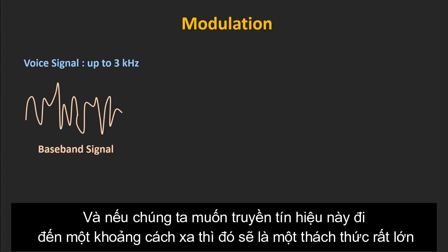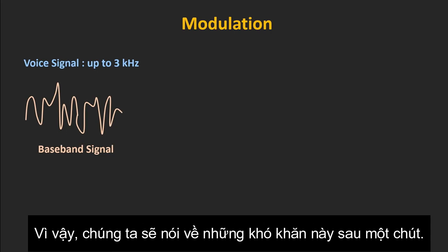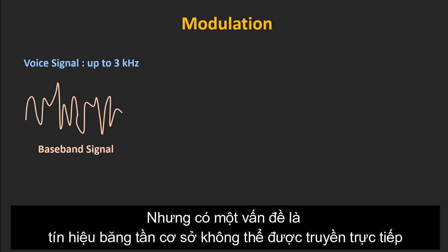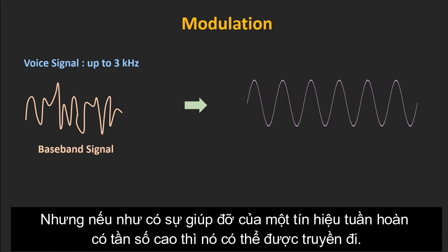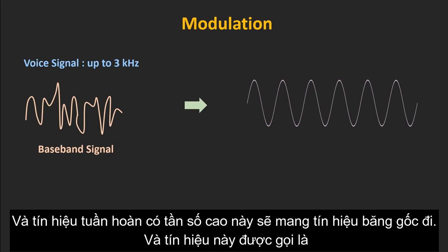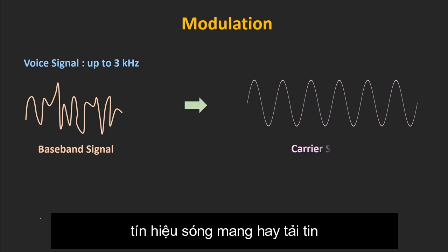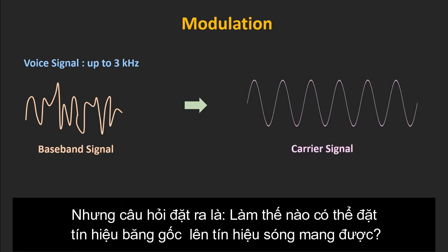If we want to transmit this baseband signal to a far distance, then there are some challenges. The baseband signal cannot be transmitted directly. But with the help of a high frequency periodic signal, it can be transmitted. This high frequency periodic signal which carries the baseband signal is known as the carrier signal. The question is, how to impose this message or baseband signal onto the carrier signal?